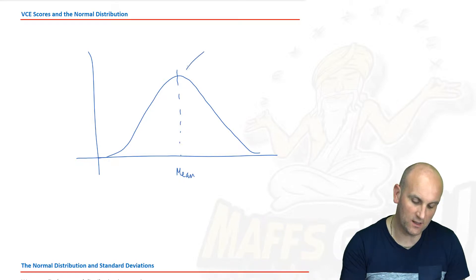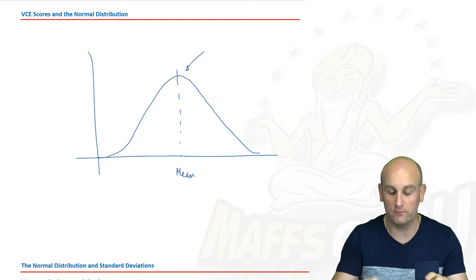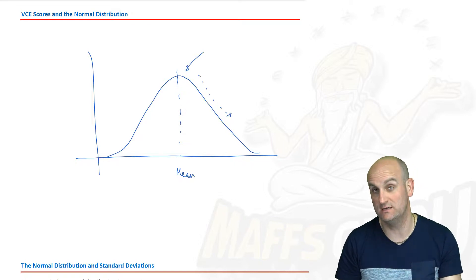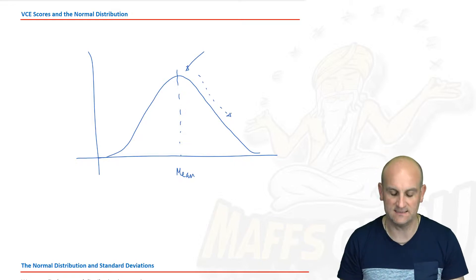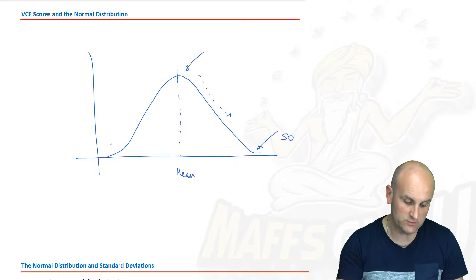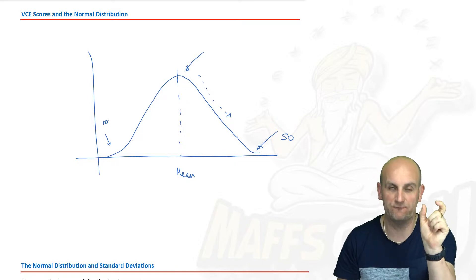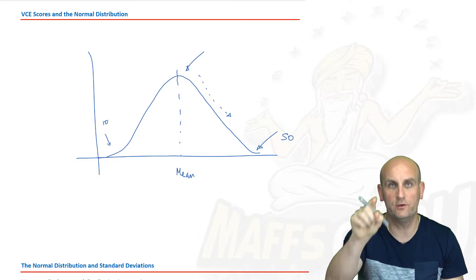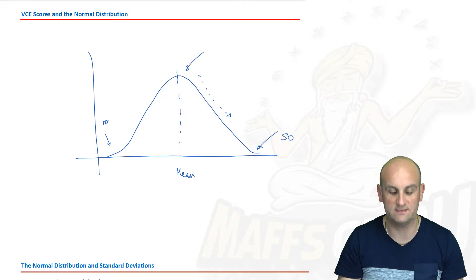This here is what we call our mean value, our average value, and generally speaking for your VCE that would be a study score of about 30. As it gets higher and higher up this bell curve, the number of people who are allowed to get those study scores gets less and less. By the time you get all the way over here you get a very small percentage who get study scores of 50.